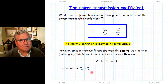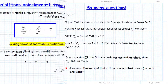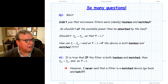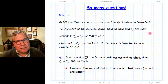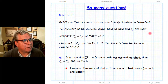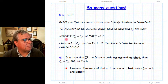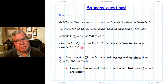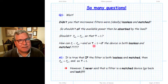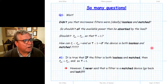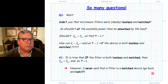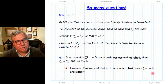You might think: if we have a matched and lossless device, we always have a situation where the power absorbed by the load equals the power available from the source, giving a transmission equal to one. That is the case if we have a two-port device that is both matched and lossless. However, for a filter the power absorbed by the load may be less than the power available from the source, implying transmission can be less than one. Which is correct? Looking back, although I said the filter was lossless, reciprocal, and linear, I never said it was a matched device.